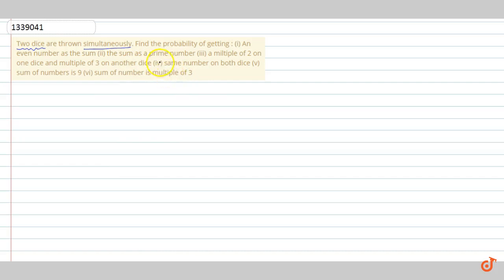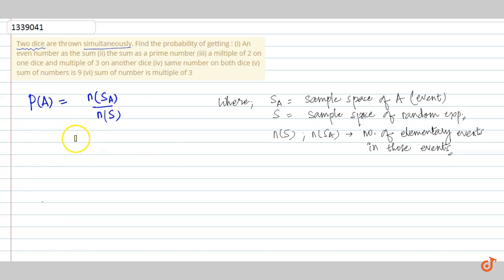We can clearly see that here many conditions are given. For each and every condition it is making an event, and for every event it is making a sample space. Clearly we are going to use the formula to find our probability. The formula is: probability of an event A equals n(SA) upon n(S), where SA is the sample space of event A, S is the sample space of the random experiment, and n(S) and n(SA) are the number of elementary events in those specific events.